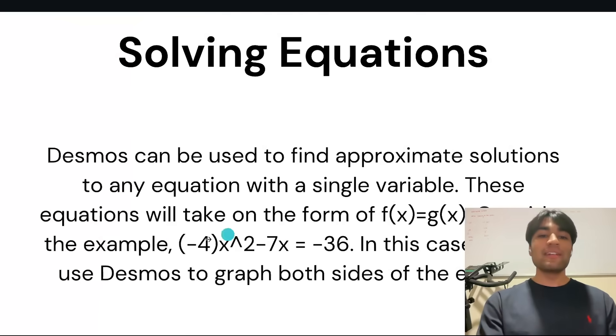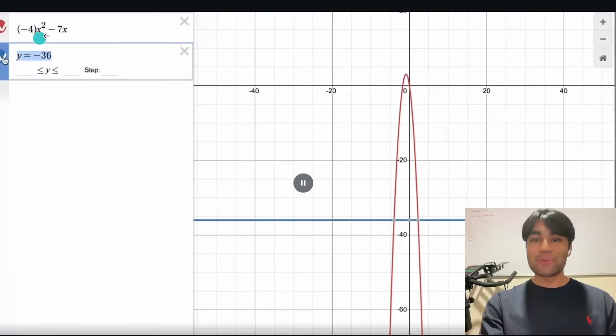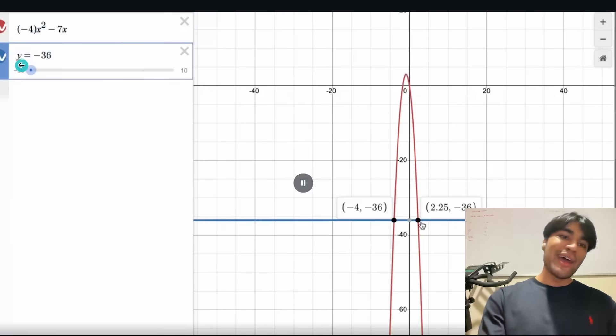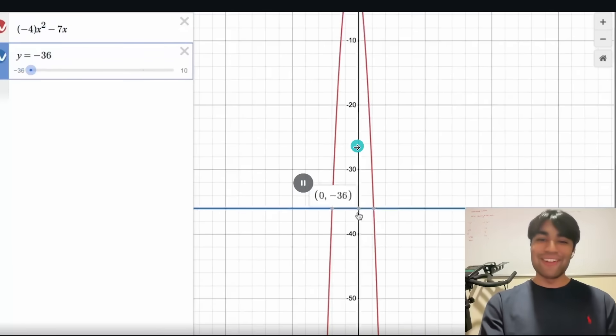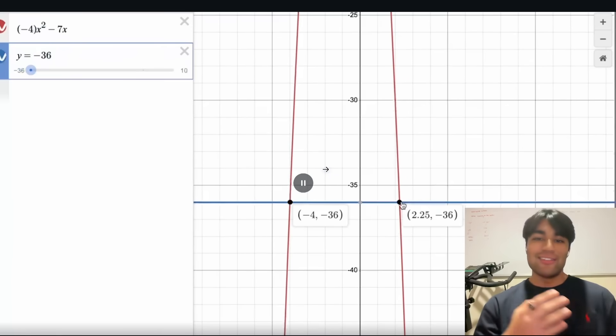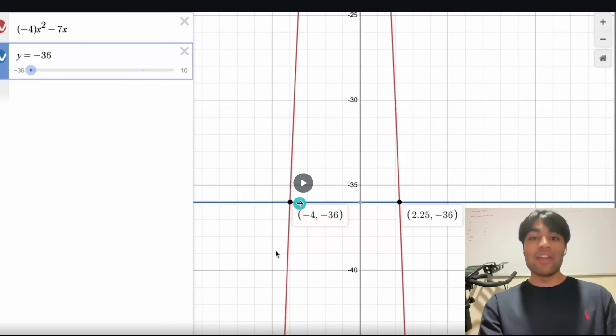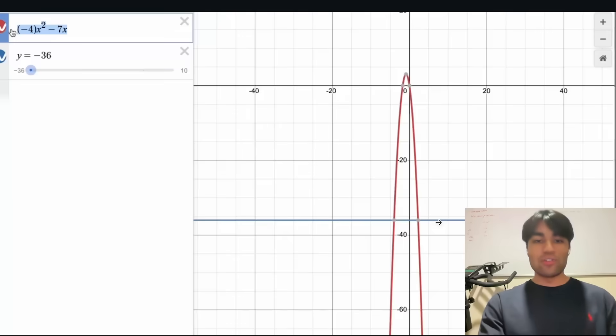All you have to do is type in the left hand side and your right hand side. So negative 4x squared minus 7x on one side and then y equals negative 36 on the other side. Desmos is going to plot this for us and those two intercepts where your red and blue line intersect those are your solved solutions. So x is equal to negative 4 comma 2.25. Those are your two solutions to this equation.